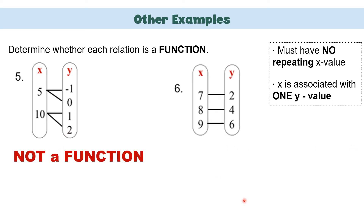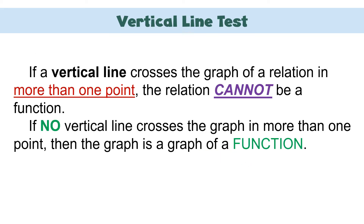How about this one? 7 is paired with 2, 8 is paired with 4, 9 is paired with 6. As you can see, each x is associated with only one y-value. Therefore, this is a function. Next, what is the use of the vertical line test in identifying a relation as a function? We use this test if the given relation is presented using a graph. If a vertical line crosses the graph in more than one point, the relation cannot be a function. If no vertical line crosses in more than one point, then the graph is a function.